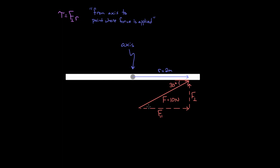If this was 30 degrees, by alternate interior angles this angle is also 30 degrees. That means the perpendicular component — opposite of the 30 degree angle — is 10 Newtons times sine of 30, which gives us five Newtons. Finally, the torque exerted by this 10 Newton force at 30 degrees is the perpendicular component of five Newtons times the distance of two meters from the axis, giving a torque of 10 Newton meters.